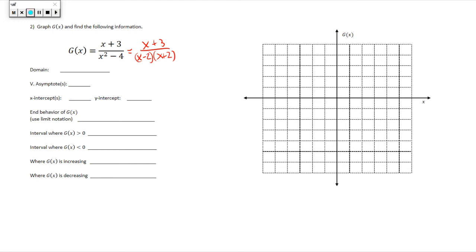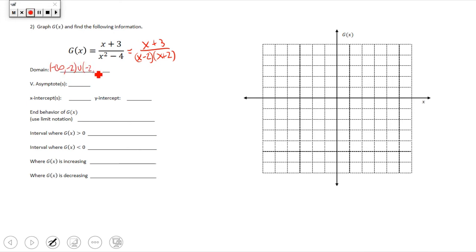Those are the domain restrictions — the only values not valid for the domain are 2 and negative 2. So we write the domain as: negative infinity to negative 2, union negative 2 to 2, union 2 to infinity.